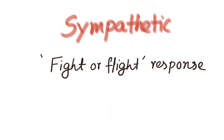Firstly, he will need wide vision to see clearly where he is running, so his pupils will dilate. His brain is working harder to make quicker decisions, and his muscles are working harder to enable him to run faster. His heart is working harder to supply the brain and muscles with more blood. Blood supply from other organs like the skin, gastrointestinal tract, and genitourinary tract will be redistributed to the heart, brain, and muscles.